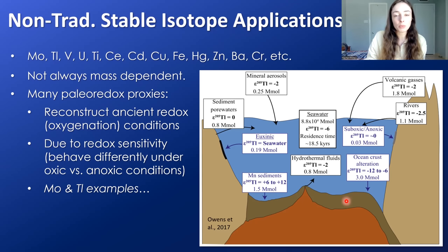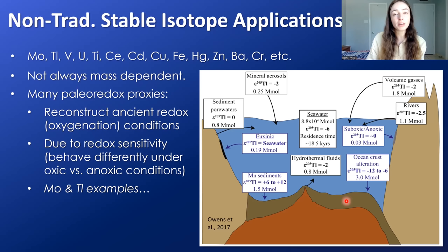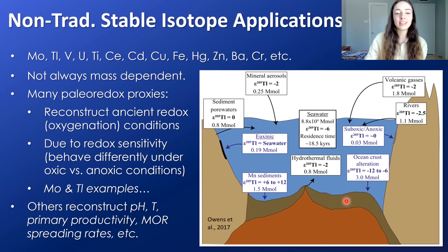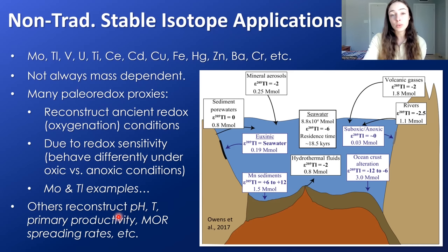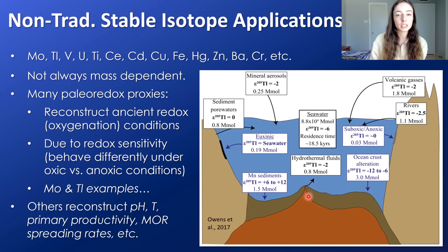There's ongoing research into the actual fractionation mechanisms for these isotope systems — understanding why they fractionate, not just that they do, is key to improving the reliability of these proxies. Beyond redox conditions, stable isotopes can also reconstruct pH conditions, temperature, primary productivity rates, and mid-ocean ridge spreading rates depending on magnesium-calcium ratios — an enormous range of ancient Earth parameters.